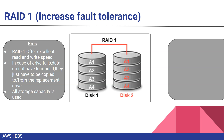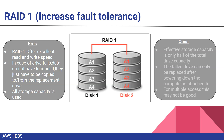The cons of RAID 1: effective storage capacity is only half of your total drive capacity. For example, if one drive is 10 GB and the second drive is also 10 GB, you can only use 10 GB - the other 10 GB is your replica. Also, a failed drive can only be replaced after powering down the computer it is attached to. For multiple access, this may add latency.